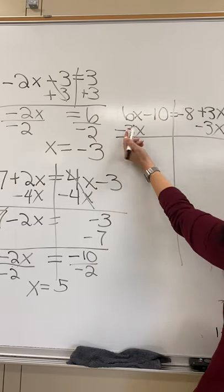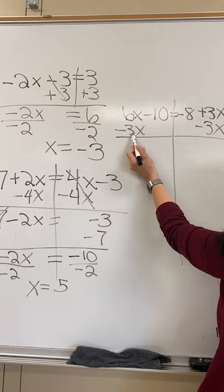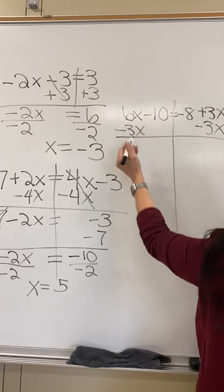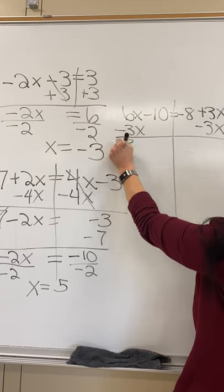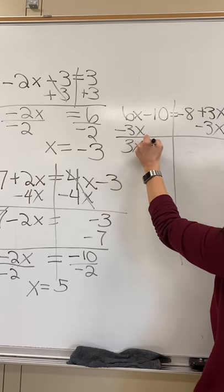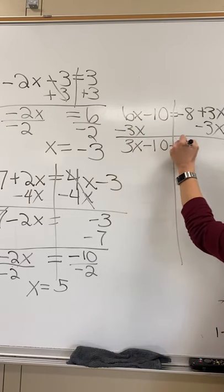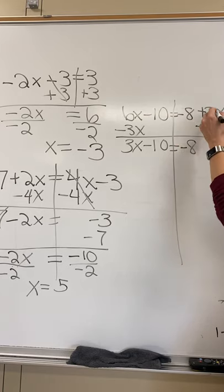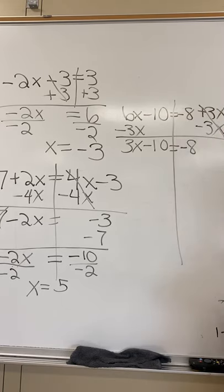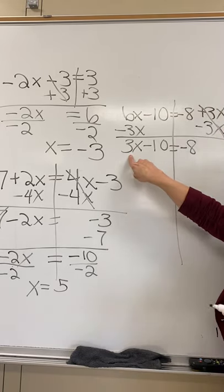So that gives me 6x minus 3x. Notice I wrote those together on top of each other. That gives me 3x. I bring down my minus 10, bring down my negative 8, and then that goes away. Okay, so now I've got a 3x minus 10.